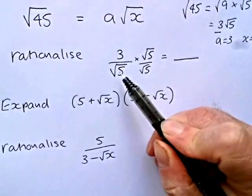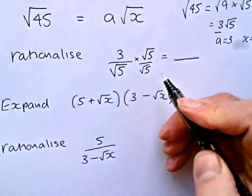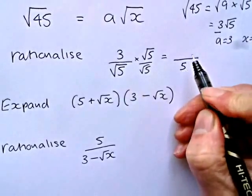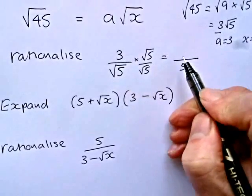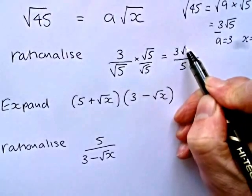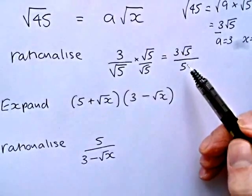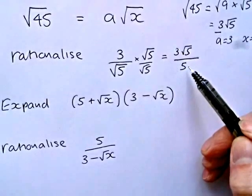It's important to remember that root of, say, x times root x would be x. So root 5 times root 5 is 5. On the top, we have 3 times root 5, which we simply write as 3 root 5. We have now rationalized a denominator, because the denominator is a rational number.